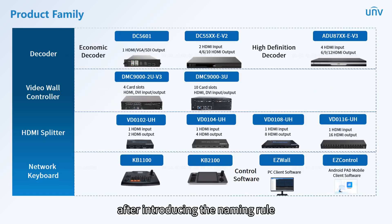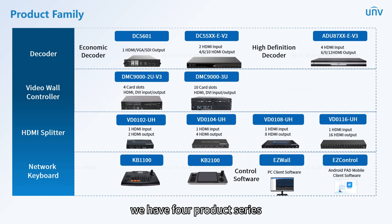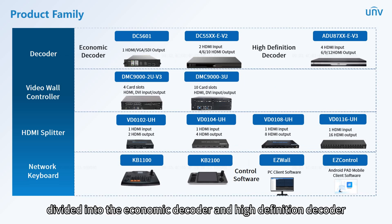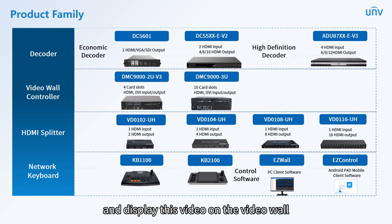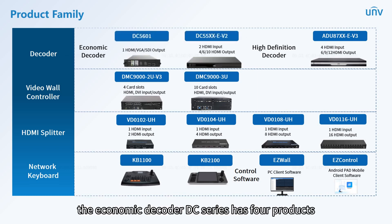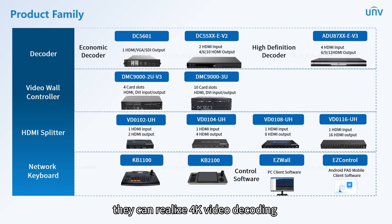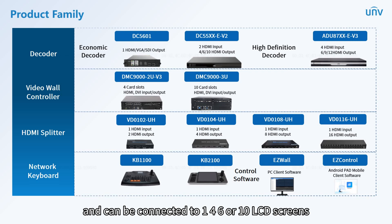We have four product series. The first one is the decoder, divided into the economic decoder and high-definition decoder. The main function of the decoder is to decode live video transmitted by IP cameras and display it on the video wall. The economic decoder DC series has four products that can realize 4K video decoding and can be connected to 1, 4, 6, or 10 LCD screens.